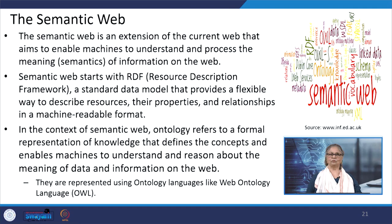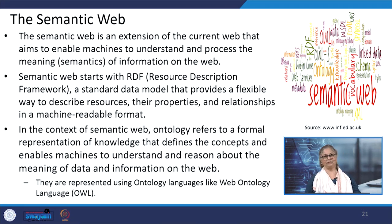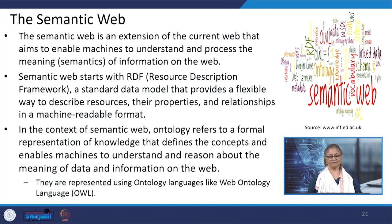For a search to be perfect, it needs to be ubiquitous — that is, it should search everywhere on the web, taking personal intentions and preferences into account. This is the point where the semantic web enters the picture. The semantic web is an extension of the current web that aims to enable machines to understand and process the meaning or semantics of information on the web. Semantic web starts with RDF, that is Resource Description Framework, a standard data model that provides a flexible way to describe resources, their properties, and relationships in a machine-readable format.